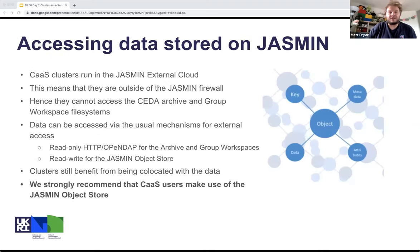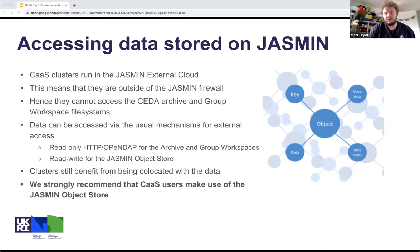Accessing data is slightly trickier because this is on the external cloud. That means they're outside of the Jasmine firewall, so they can't mount the CEDA archive and group workspace file systems because of the difference between the users. However, you can still access data via the usual mechanisms for external access — the HTTP access we provide and especially the object store — and the clusters still benefit from being co-located in the same data center as that data. We strongly recommend that CaaS users use the object store.